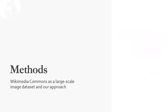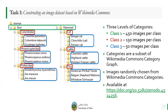Let's specify our method. First, we will construct an image dataset based on Wikimedia Commons, a free and collaborative image database available online. We will assign three levels of categories for each image, where class 1 categories are assigned 450 images per class, class 2 has 150 images per class, and class 3 has 50 images per class. The categories are a subset of the Wikimedia Commons category graph, and images are regularly chosen from Wikimedia Commons categories.